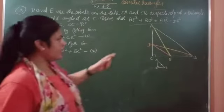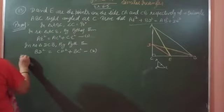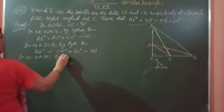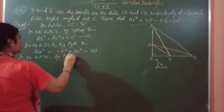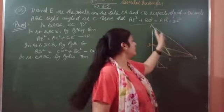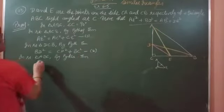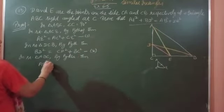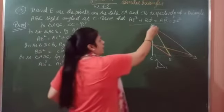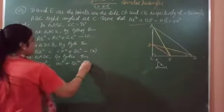Next, we have AB square from triangle ABC. In right triangle ABC by Pythagoras theorem, in ABC triangle, AB is the hypotenuse. AB is opposite to angle C. AB square is equal to AC square plus BC square. We take it as equation number 3.